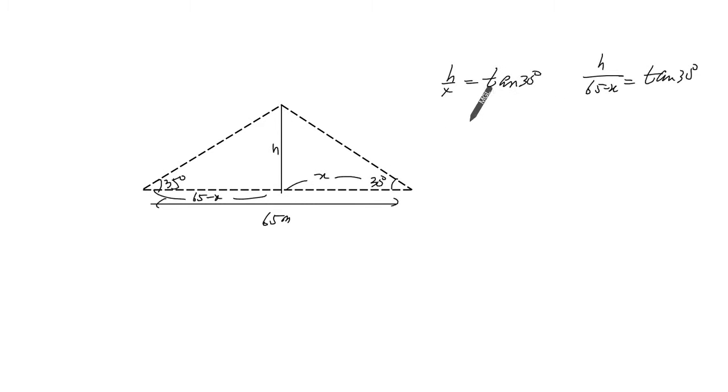So how can we use these two information to find out what h is? We're looking for the height of the tree, right? Let's actually isolate for h here. We get h is something that we can represent with x, in terms of x.